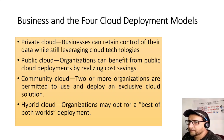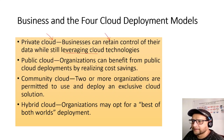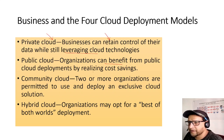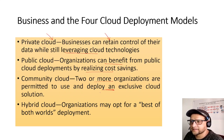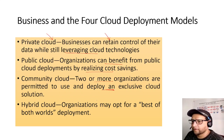For deployment models: Private cloud allows businesses to retain control of their data while leveraging cloud technologies. Public cloud allows organizations to benefit from cost savings, as it may be free or cheaper. Community cloud lets two or more organizations with similar security needs deploy an exclusive cloud solution they can trust.